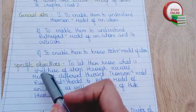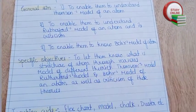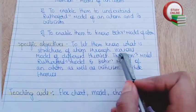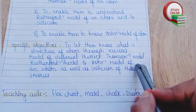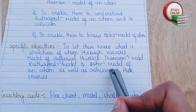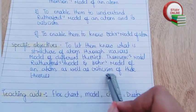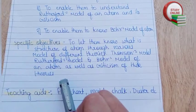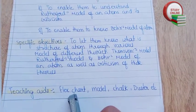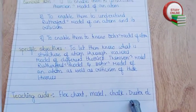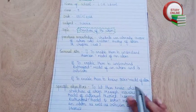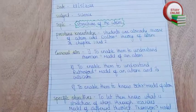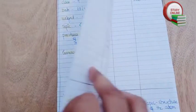Here you can see specific objectives: to let them know what is the structure of an atom through various models of different theories - Thompson's model, Rutherford's model, and Bohr's model of an atom, as well as criticism of these theories. Here you can see teaching aids: flex chart, model, chalk, duster, etc. Now let's turn the page.